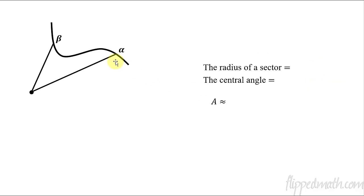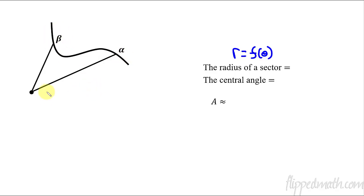We have something that maybe looks kind of crazy with some curving to it, and we're trying to figure out the area of this piece. Let's say that r is going to be some function in terms of theta — so r equals f of theta. If that's the case, then this length here, the radius, would be f of alpha. We typically use Greek letters when talking about angles. This is angle alpha, this is angle beta — the starting angle is alpha and the entire angle is beta.